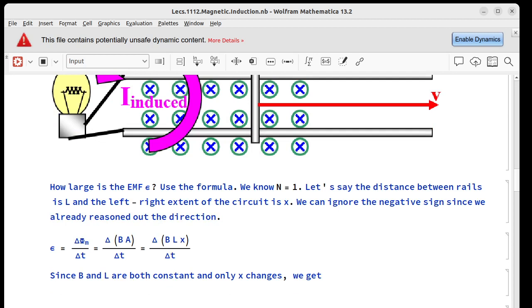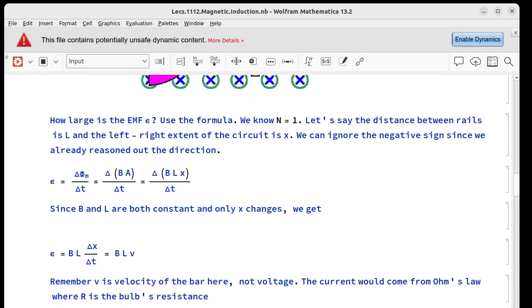The current comes from Ohm's law, which is just voltage over R, or ε/R, or BLV/R. So this tells us how big the current will be. If we wanted to find the power dissipated in this resistance, we'd say it's I × V. So this times this, which gives us (BLv)²/R.